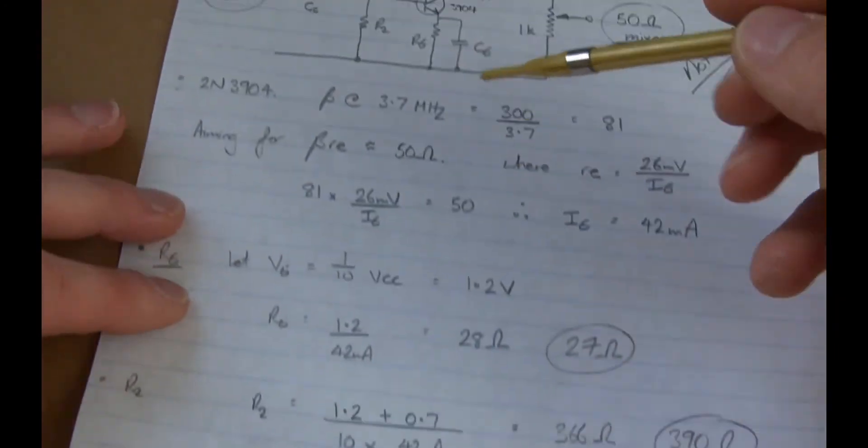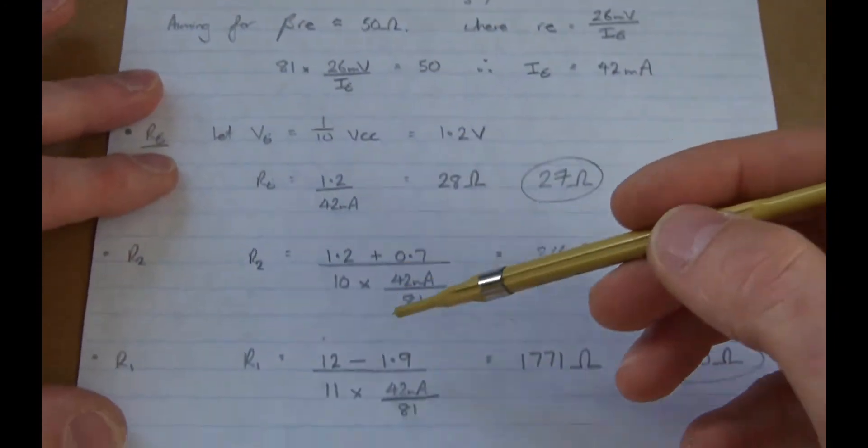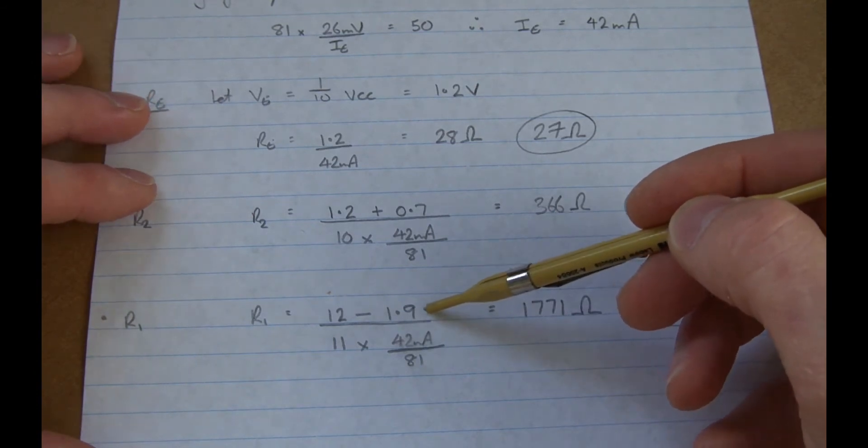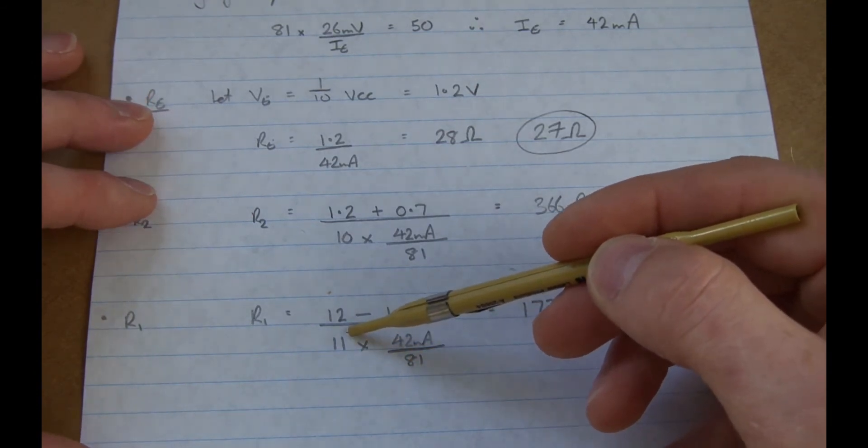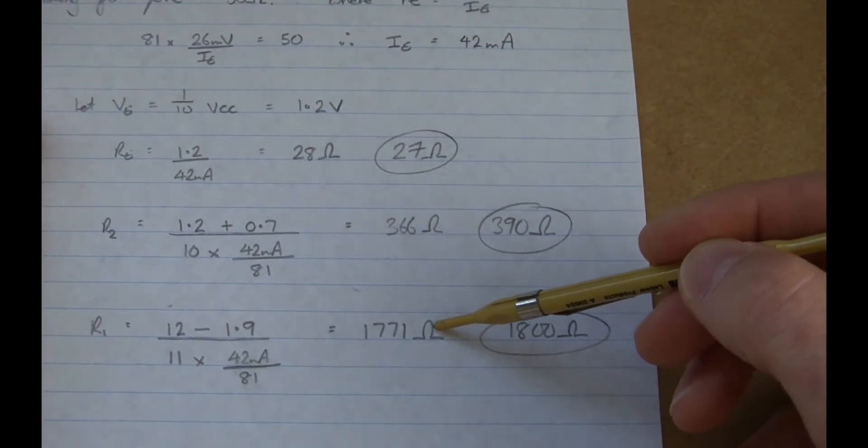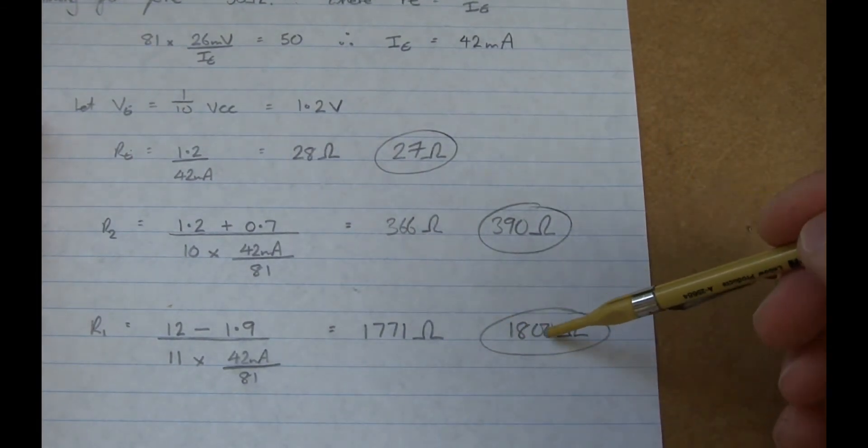For R1, that's the top resistor there, it's going to be VCC minus the voltage on the base, divided by 11 times the base current, so 42 milliamps divided by 81. It comes out to be 1771, and for this one I'm just going to use 1800 ohms.